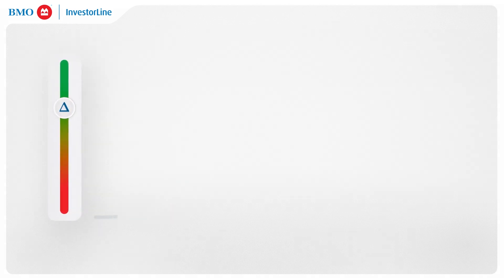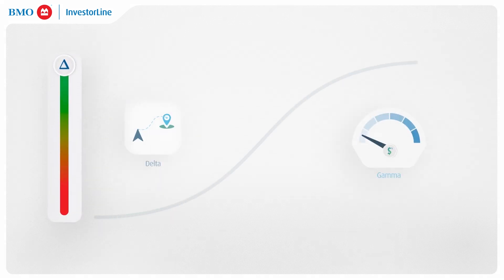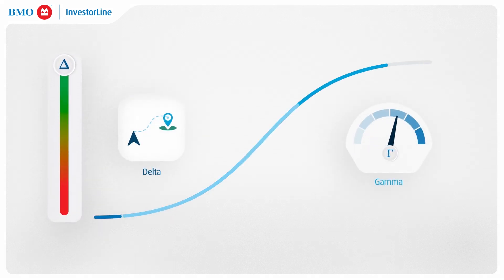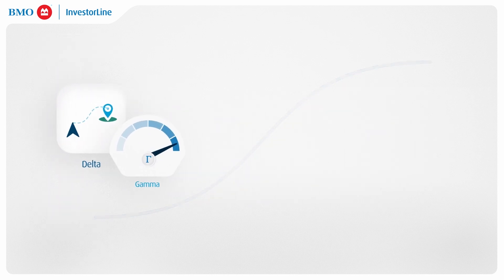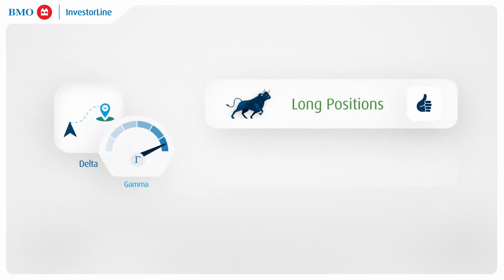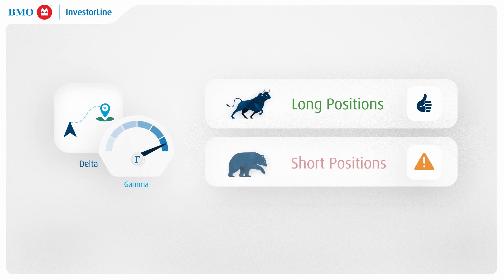In essence, while delta maps the option's trajectory, gamma accelerates it. This acceleration is advantageous for long positions but can be detrimental for short ones, thus playing a crucial role in strategy selection and optimization.